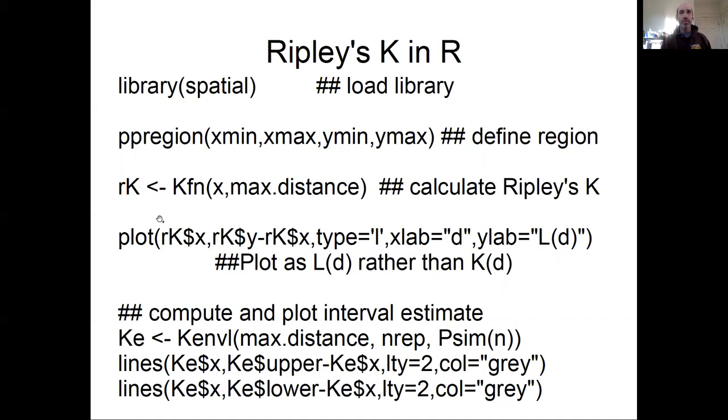The actual traditional Ripley's K is defined in a way where the null expectation is along the one-to-one line. So it's very common to generate the figures like we saw where the null expectation is around the zero line to just subtract off the X from the Y. So that moves the reference point to the X axis rather than the one-to-one line, which most people find easier to interpret.